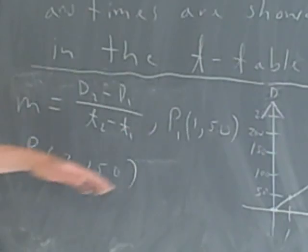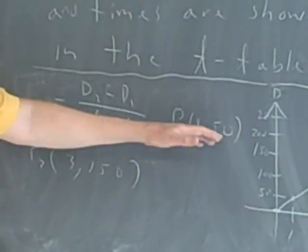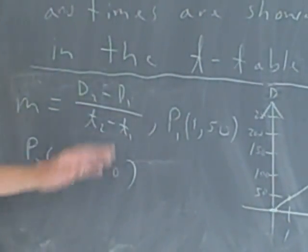Okay, so I've got two points, so I can find the slope, and then I can find the equation using the point-slope formula, which requires a slope and one point.